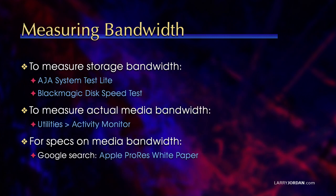In order to measure storage bandwidth, we can use two applications: AJA System Test Light or Blackmagic Disk Speed Test. I use both — I like both. They're both excellent, they're both free, and they're both available in the Mac App Store. That measures the maximum speed that your storage is capable of. To measure actual media bandwidth, I use Activity Monitor from the Utilities folder on my Mac, and I can measure network speed and locally attached storage speed.